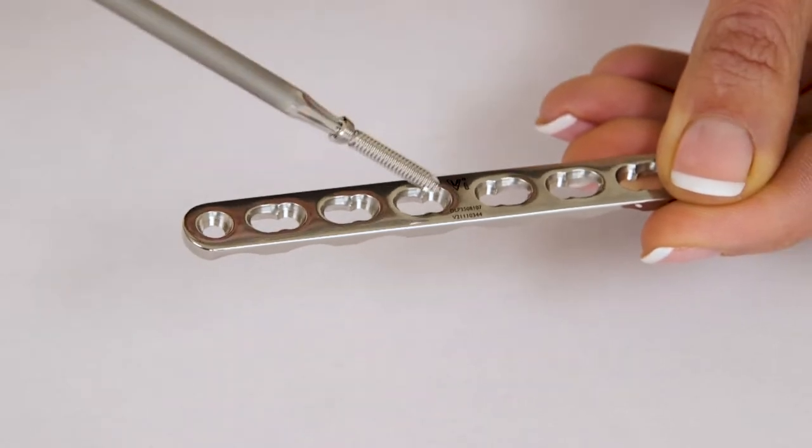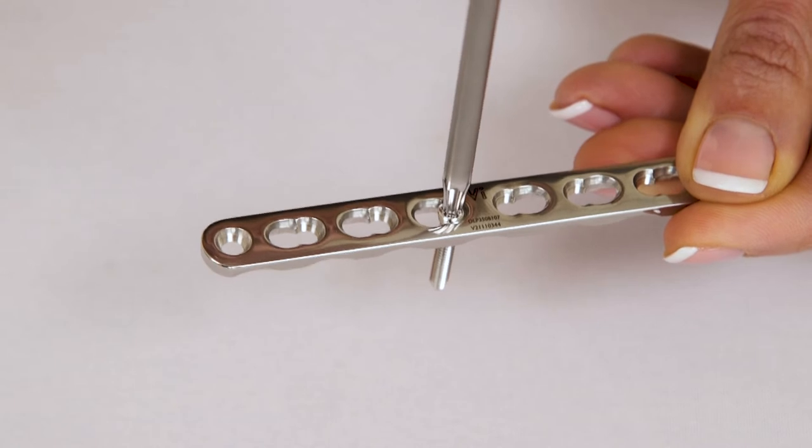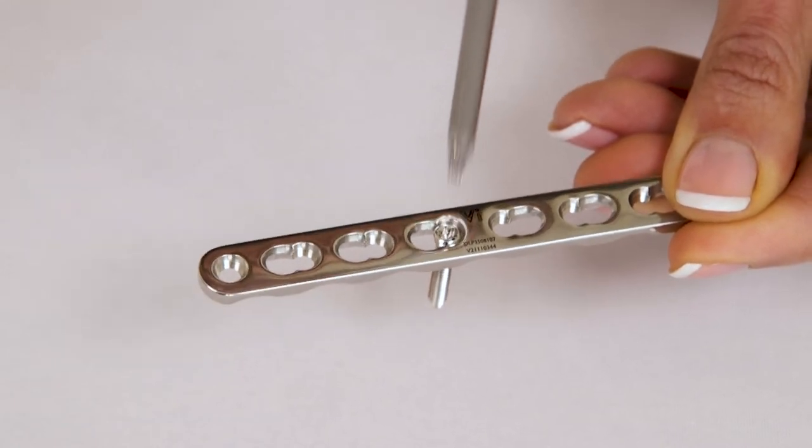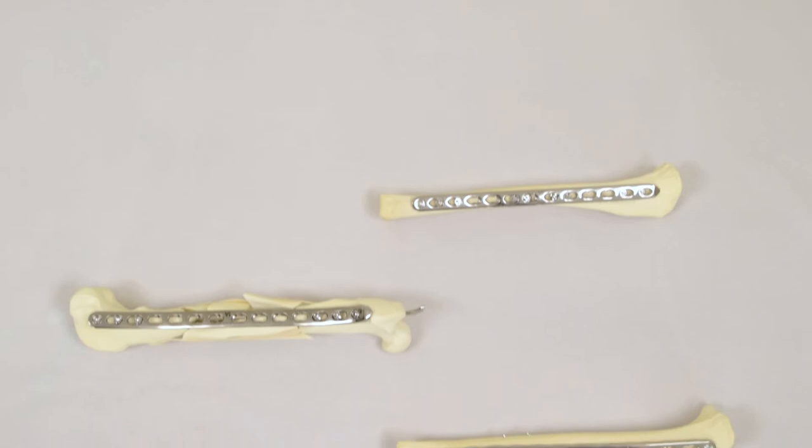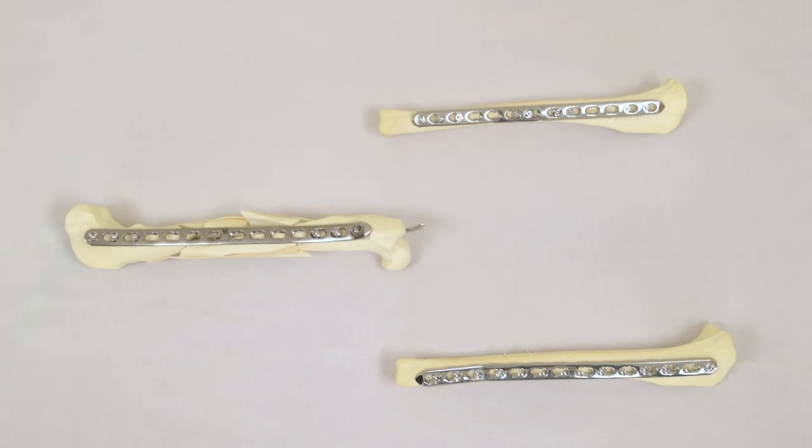Locking technology offers a very secure plating construct. The threaded screw heads lock into the threaded plate holes, creating a rigid angle stable construct. Where axial compression is not appropriate or achievable, the DLP can be used in purely locking mode as a neutralization or bridging plate.